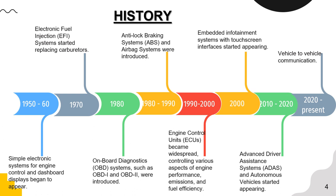During the 1950s and 60s, simple electronic systems for engine control and dashboard displays began to appear. By the end of the 1970s, electronic fuel injection systems started replacing carburetors. In 1980, on-board diagnostic systems such as OBD1 and OBD2 were introduced. Between 1980 and 1990, applications such as Anti-Lock Braking System (ABS) and airbag systems were introduced.